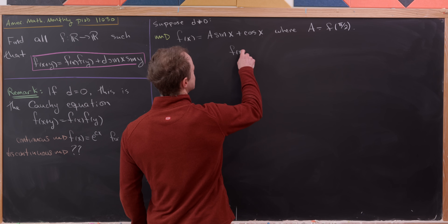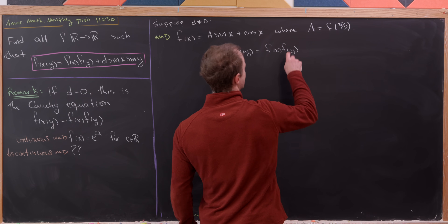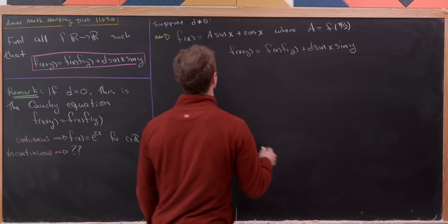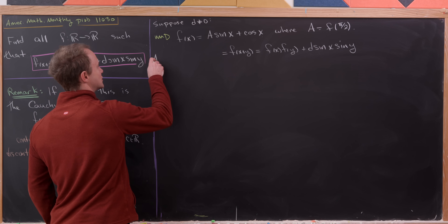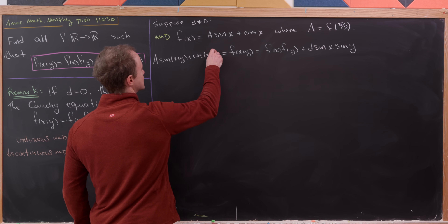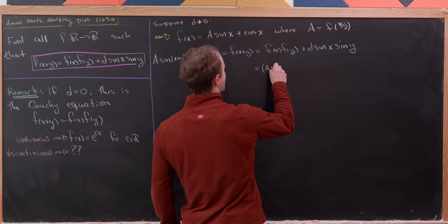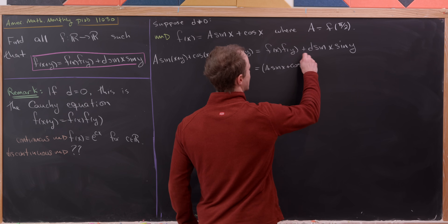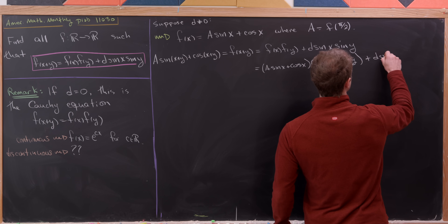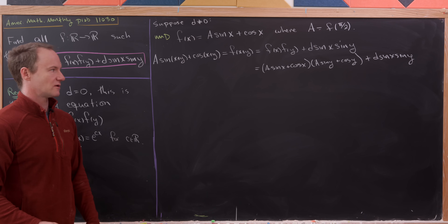We know f(x+y) = f(x)·f(y) + d·sin(x)·sin(y), and also f(x+y) = A·sin(x+y) + cos(x+y). Substituting our form gives (A·sin(x) + cos(x))·(A·sin(y) + cos(y)) + d·sin(x)·sin(y).